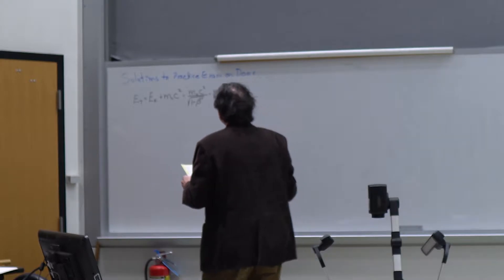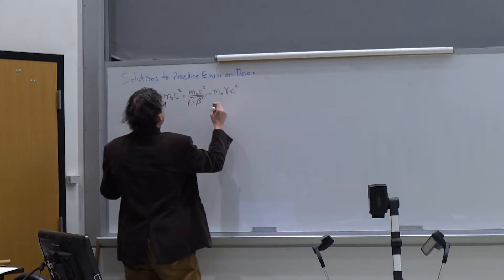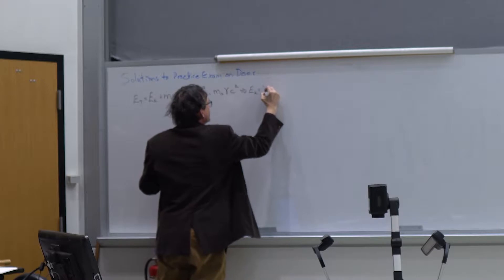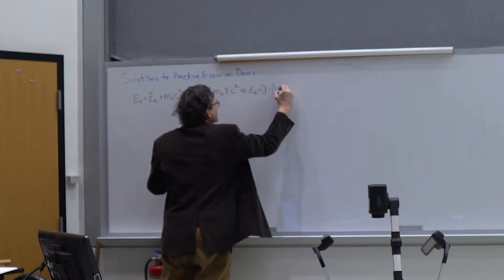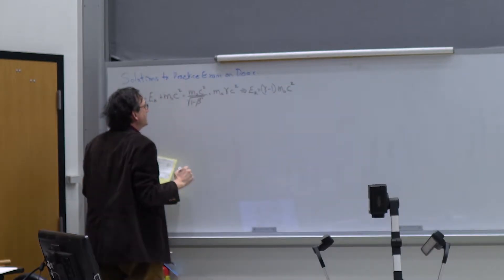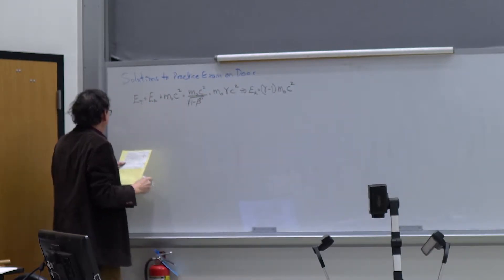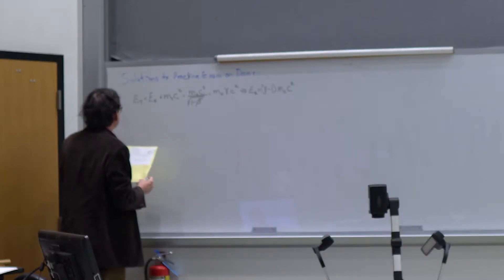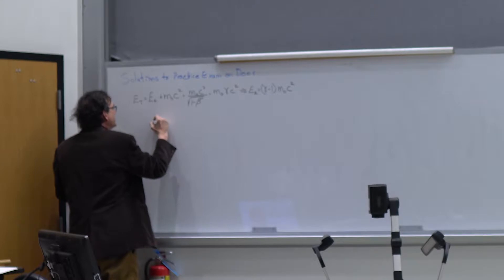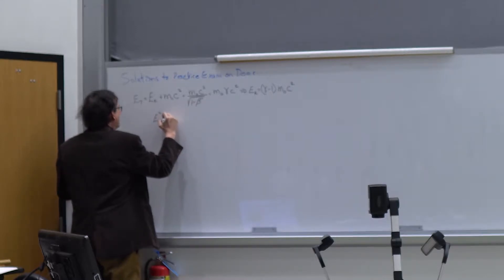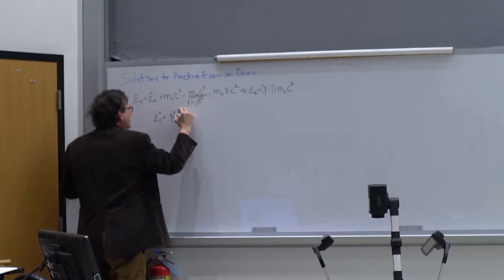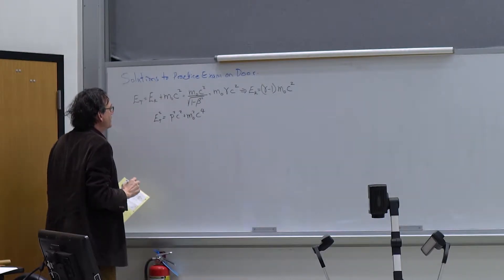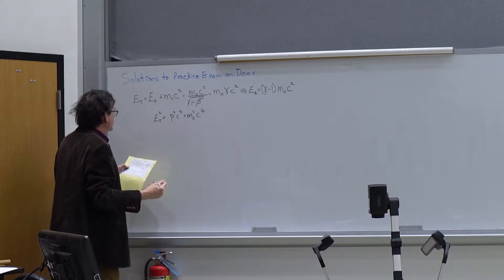We can also solve for kinetic energy: KE equals (γ − 1) times the rest mass energy m₀c², where m₀ is the rest mass. Another expression for total energy involves the square: E_total² = p²c² + (m₀c²)². This is another important expression we'll use.